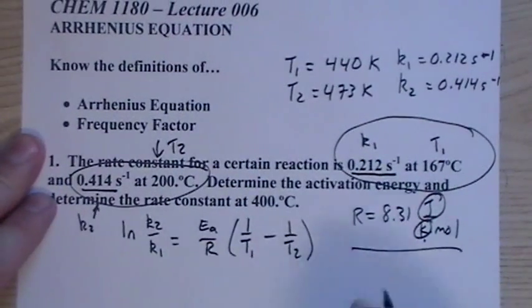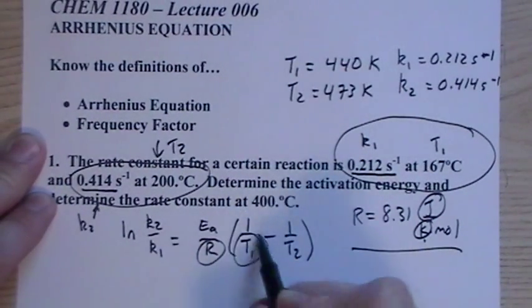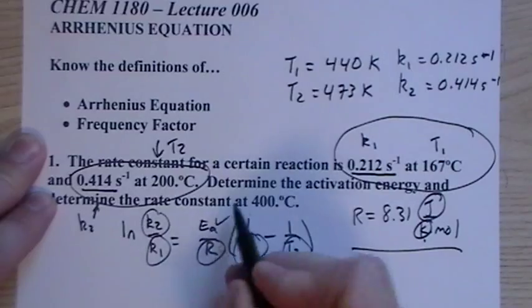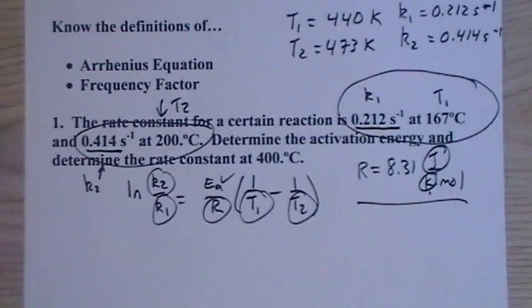So now we have everything, we have R, we have the two temperatures, we have k1 and k2, so that will allow us to find Ea. The only trick here now is to make sure that we don't mess up with the algebra, because now it's just a big algebra problem, just solving for Ea.